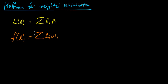It turns out that solving this minimization problem over uniquely decodable codes is exactly the same. There was nothing important about the Huffman algorithm — the optimality of the Huffman algorithm does not depend on these weights being probabilities.